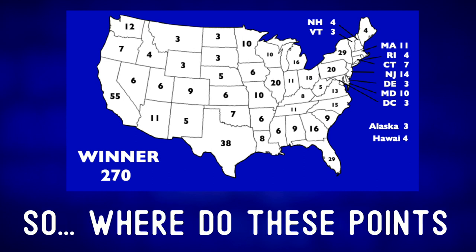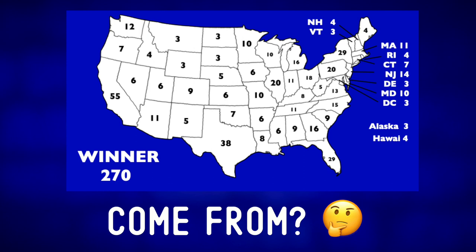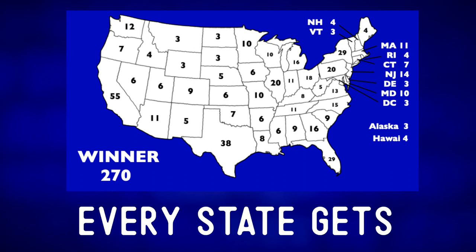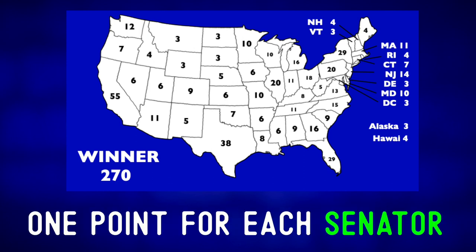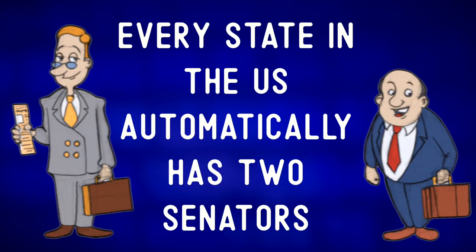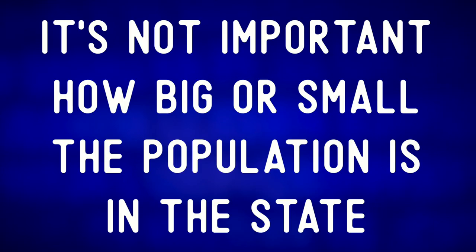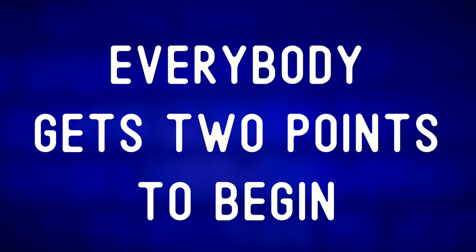So where do these points come from? Every state gets one point for each senator. Every state in the US automatically has two senators — it's not important how big or small the population is in the state. Everybody gets two points to begin.